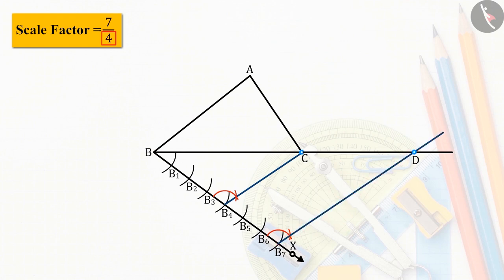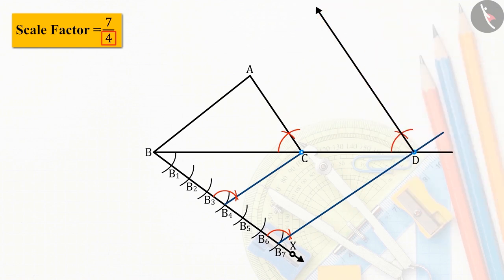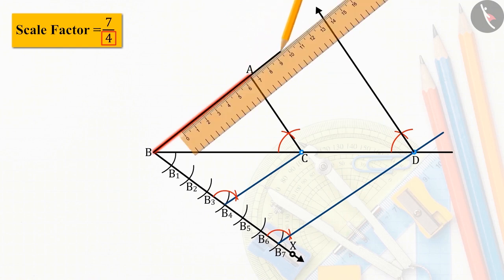Now, from point D, parallel to side AC, let us draw a line. On extending BA, it will intersect at point E.